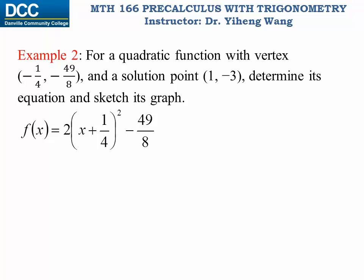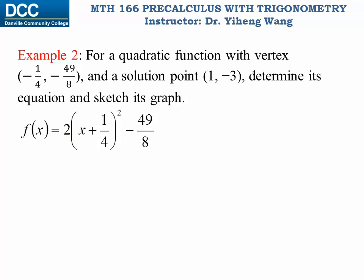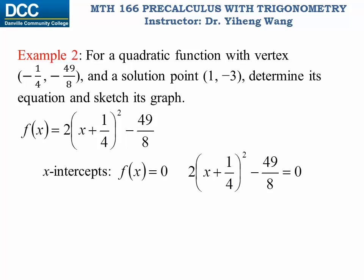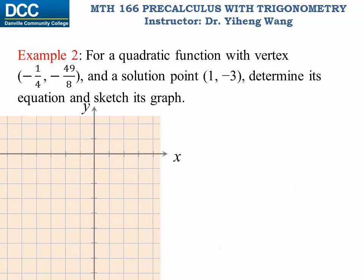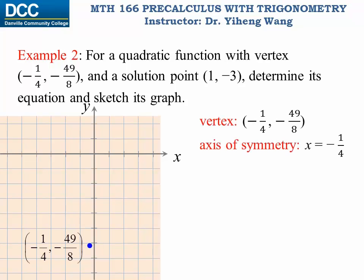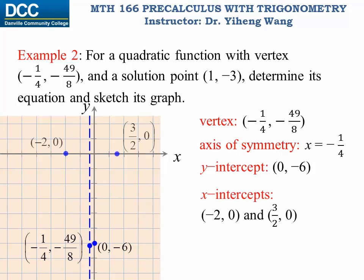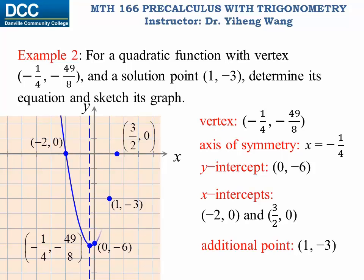From this standard form we find the y-intercept by substituting x = 0, giving (0, −6). To find the x-intercepts, we set the function equal to zero and solve for x — the standard form makes this easier. The x-intercepts are x = −2 and x = 3/2. Now we can sketch the graph using the vertex, axis of symmetry, y-intercept, x-intercepts, and the additional solution point. Since the leading coefficient is negative — wait, a = −2 which is negative — the shape is a downward curve. The vertex indicates the maximum value of this function.